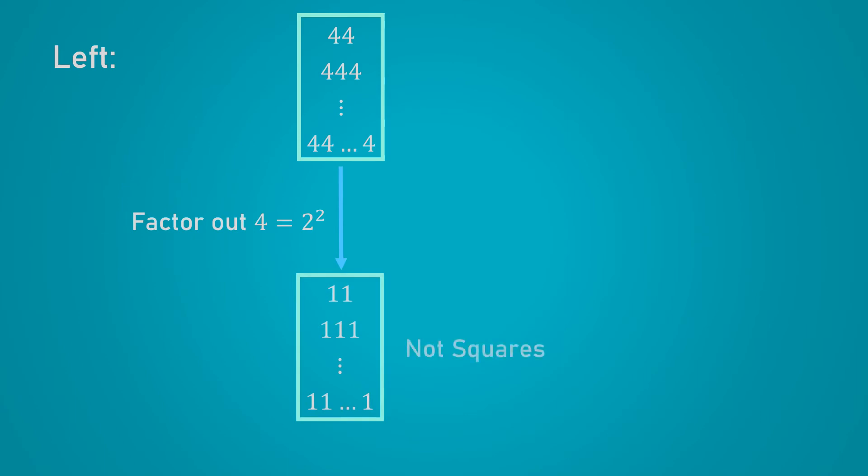That leaves us with one pesky case, the repeated 4s. What can we do with these? Well, since we have already handled the other 8 cases, we can try reducing these to one of those. And it turns out that since 4 equals 2 squared, we can reduce this to the case with repeated ones. We know that those aren't squares. And so if we multiply back by 4, the result will still not be squares, which handles the case with all 4s. And with that, we have covered all 9 cases, concluding our proof.